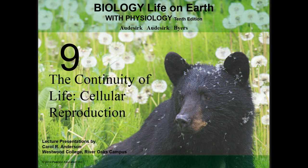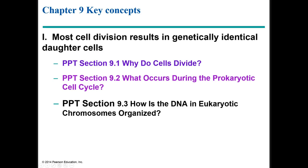First, let's focus on cell division. Most cell division results in genetically identical daughter cells. The topics that will be covered for this concept include why do cells divide, what occurs during the prokaryotic cell cycle, and how is the DNA in eukaryotic chromosomes organized.